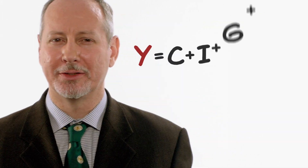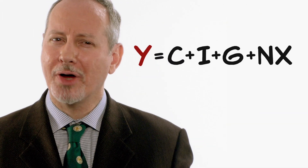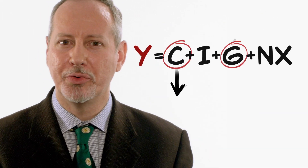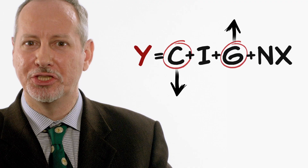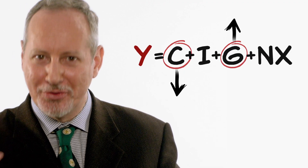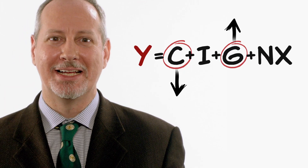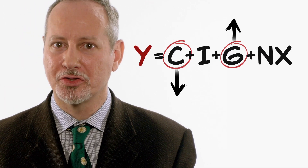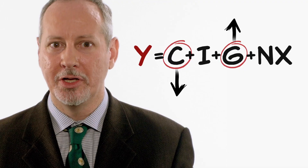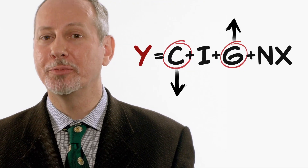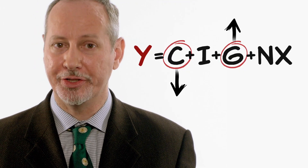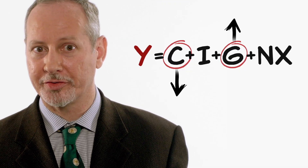Now, if you're thinking: why don't we try to offset the fall in C with an increase in G — good thinking. That's the idea behind fiscal policy, which we'll take up in greater depth in a later video in this course.